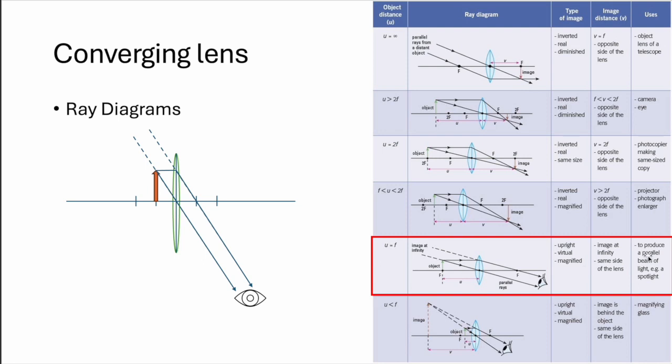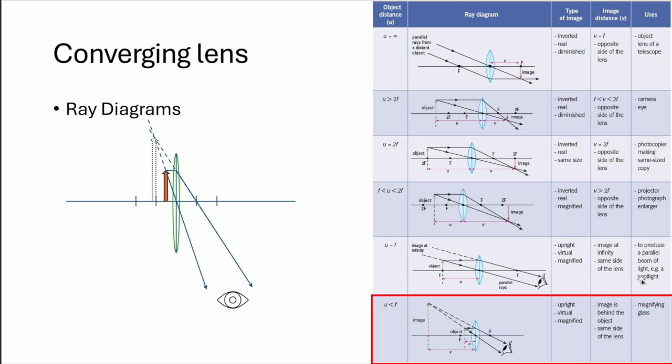And lastly, the most common one will be when an item is between the lens and your focal point. Draw the straight one first, then the bent one, and you will realize that actually it is a bit diverging. So if you extrapolate it, you draw backwards, you will get a large item behind the object. So it is also upright, virtual magnified image is behind the object. And the common use of this would be magnifying glass.